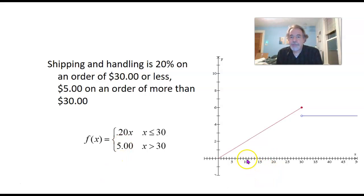So if you order $10 worth of stuff, they add on 20% of 10, which is 2. If you order $25 worth of stuff, they add on 20% of $25, which is whatever that is. But if you order, say, $35 worth of stuff, they add on $5.